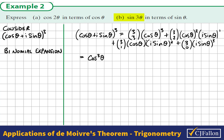Neatening this up: ³C₃ is 1, ³C₂ is 3, ³C₁ is 3, and ³C₀ is 1. We get an i² term — remember i² is negative 1, so we change that. And we get an i³ term; i³ is the same as negative i, so we substitute that in.